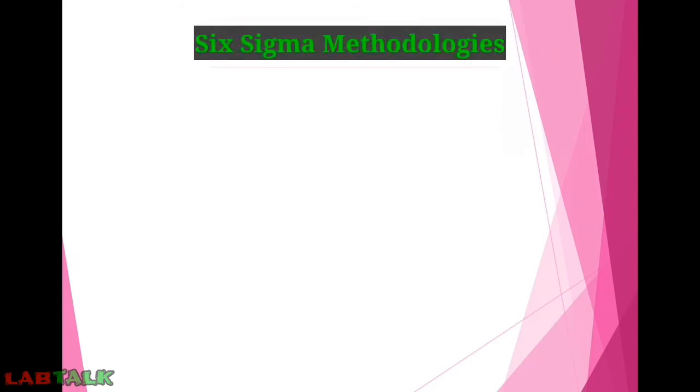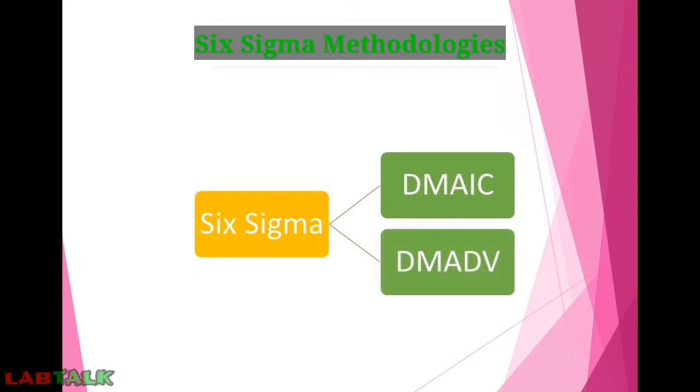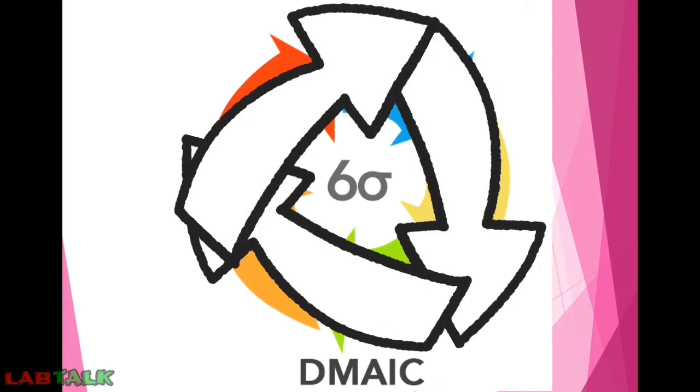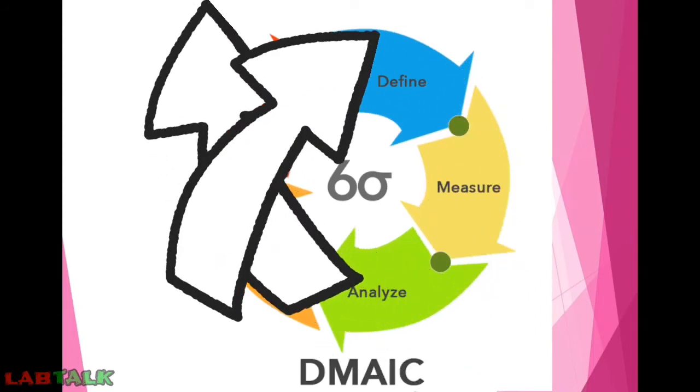This Six Sigma quality management system works on two methodologies. One is called DMAIC and the other is called DMADV. DMAIC stands for Define, Measure, Analyze,